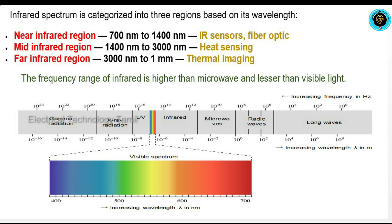The third one is the far infrared region, with a value of 3000nm to 1mm. The near infrared region is used for IR sensors and fiber optics. The mid infrared region is used for heat sensing. The far infrared region is used for thermal imaging.